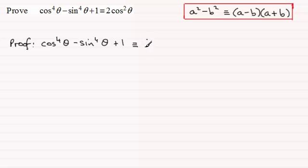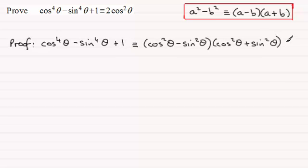We can reduce it down to (cos squared theta minus sine squared theta) multiplied with (cos squared theta plus sine squared theta). Okay and then we've got that plus one on the end.